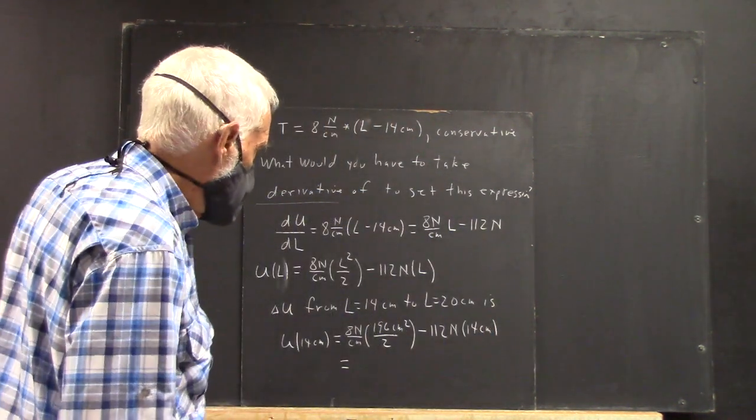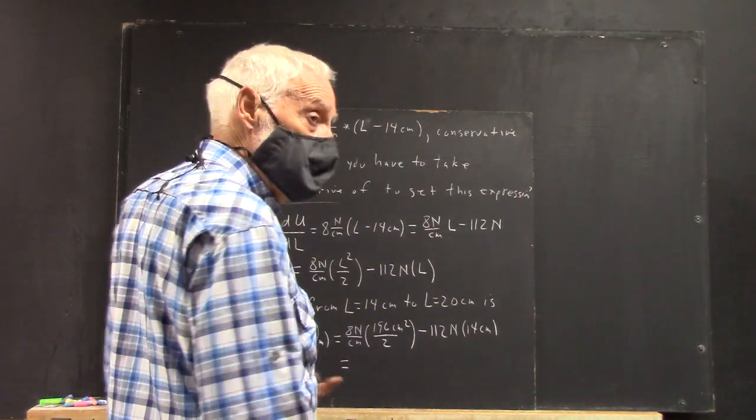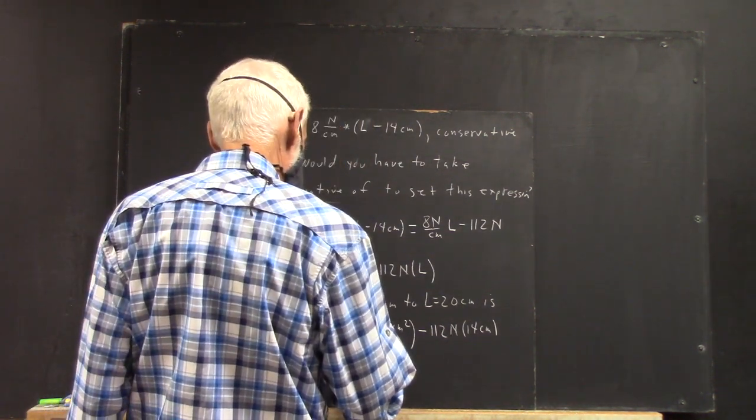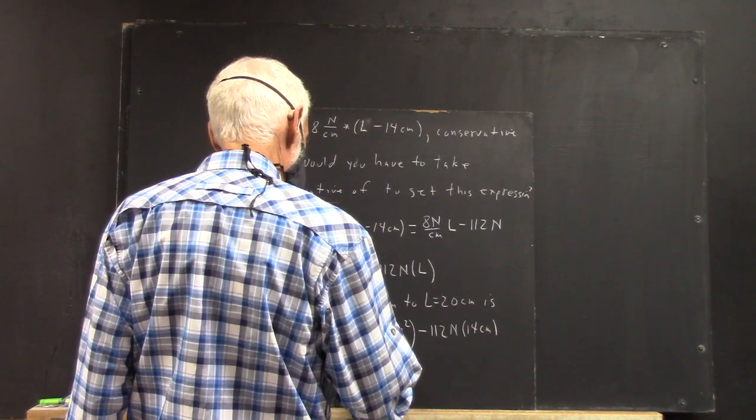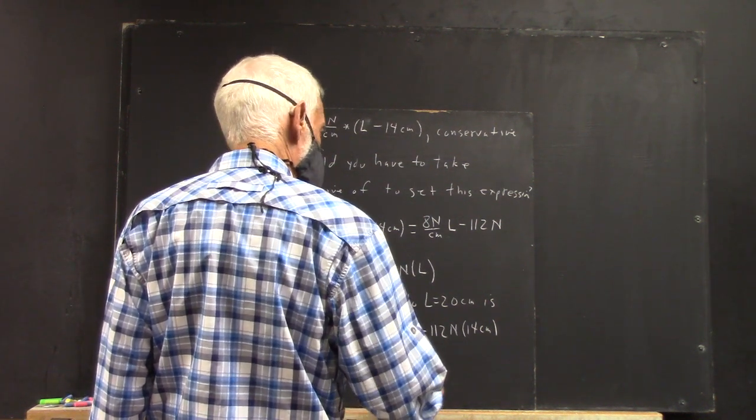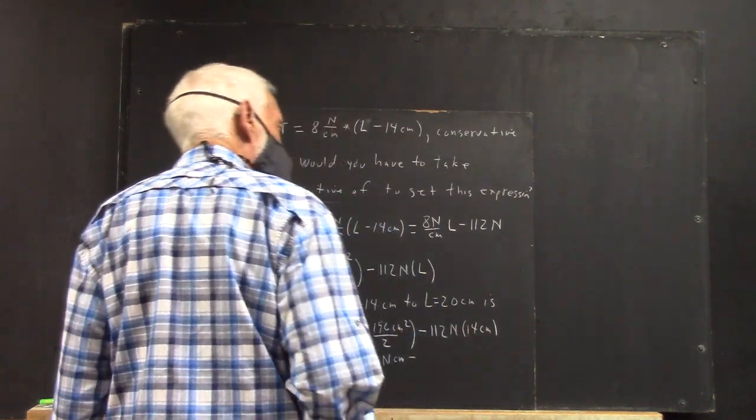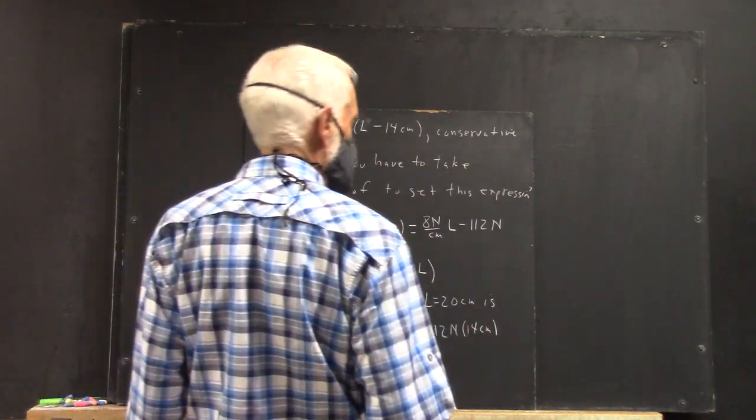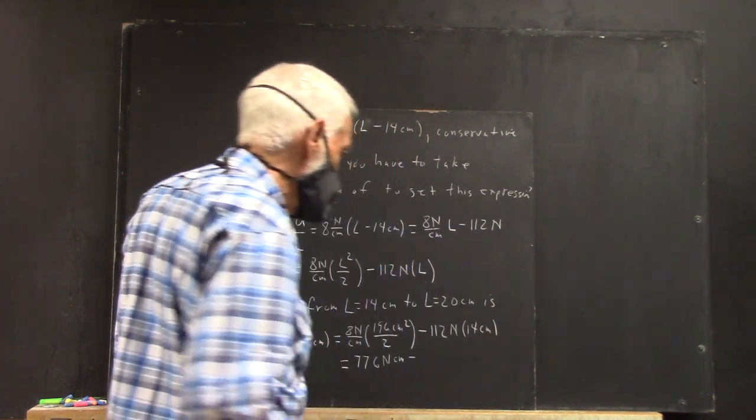Well, this is going to end up being 4 times 196, which is 776 centimeters. Minus 112 times 14 is, oh man, why do I have to use these numbers?